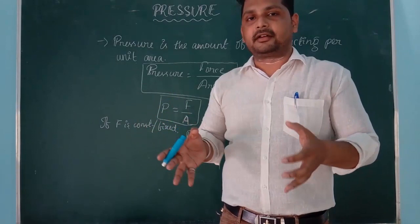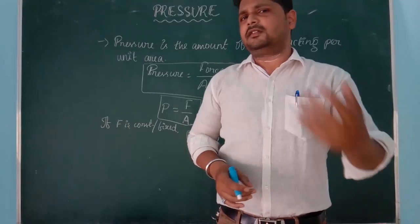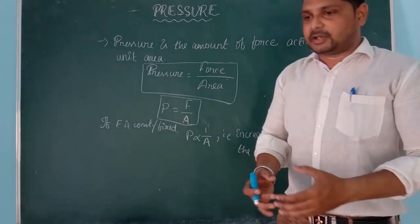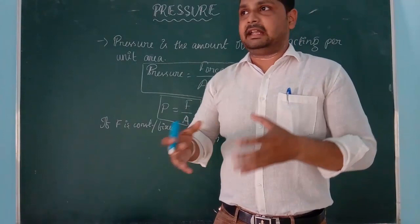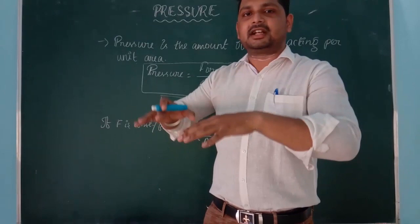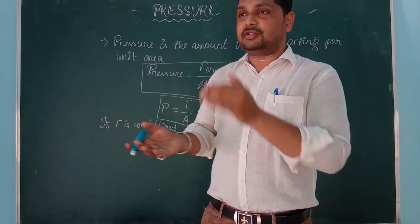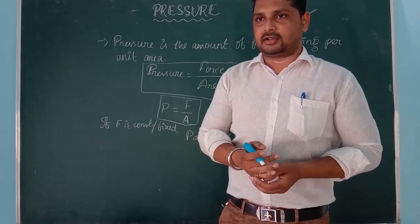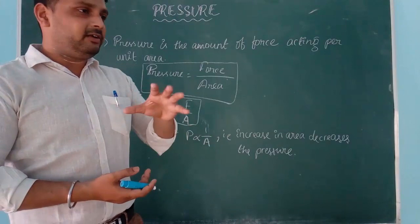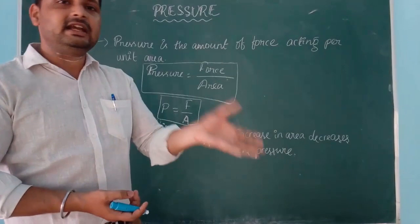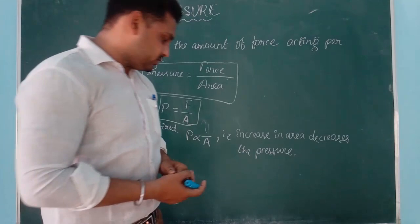The rear wheels of a tractor are very broad. This is because tractors sometimes work in muddy areas — if the back wheel were small, the tractor would sink down. The broader area decreases the pressure so the tractor can move easily in mud. By increasing area we decrease the pressure, and by decreasing area we increase the pressure.